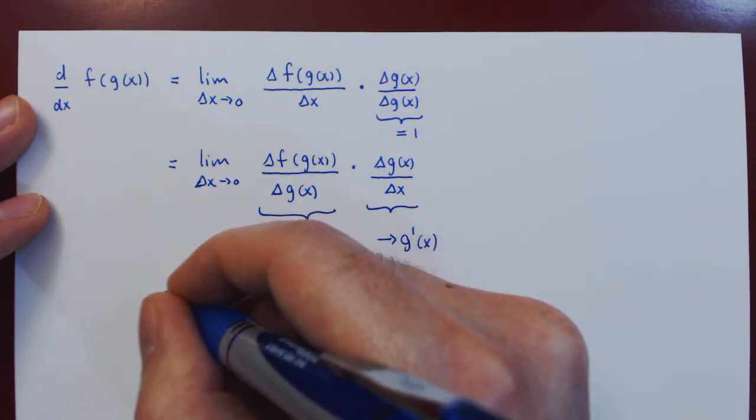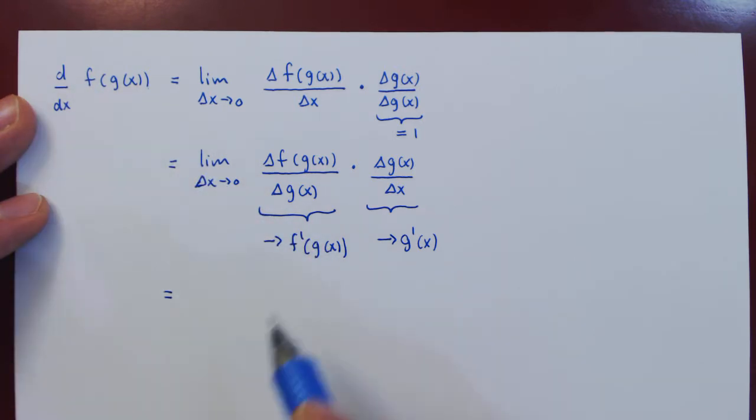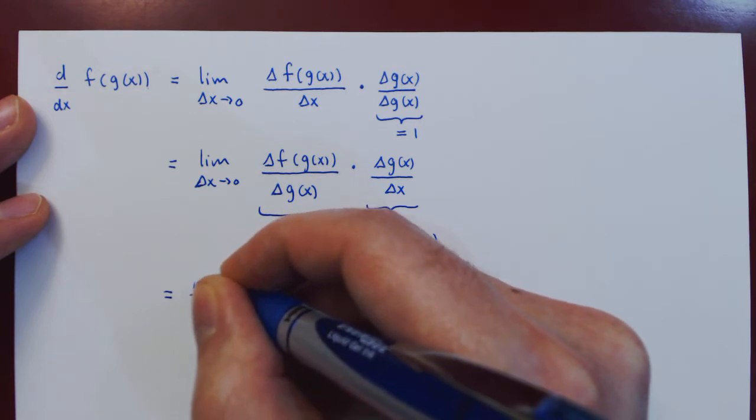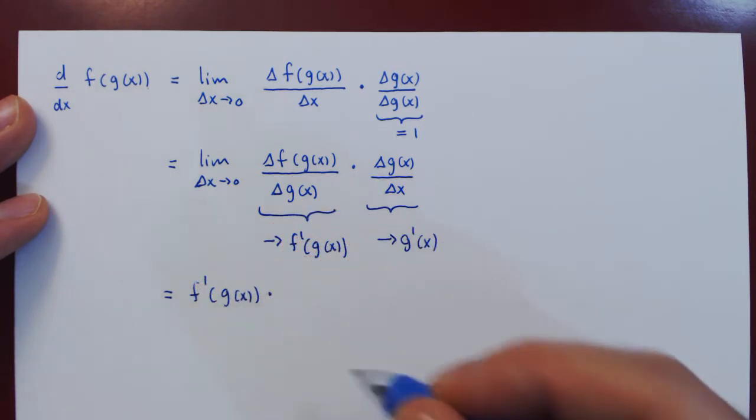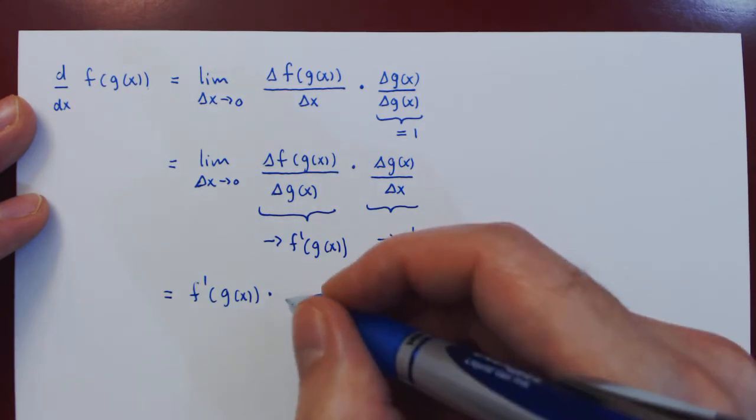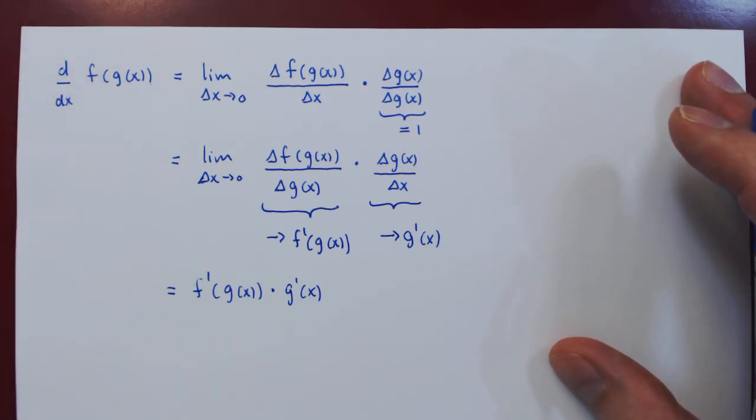So the conclusion is that the derivative of f of g of x with respect to x will be in the limit the derivative of f at g of x times the derivative of g at x. And this completes the proof of the chain rule.